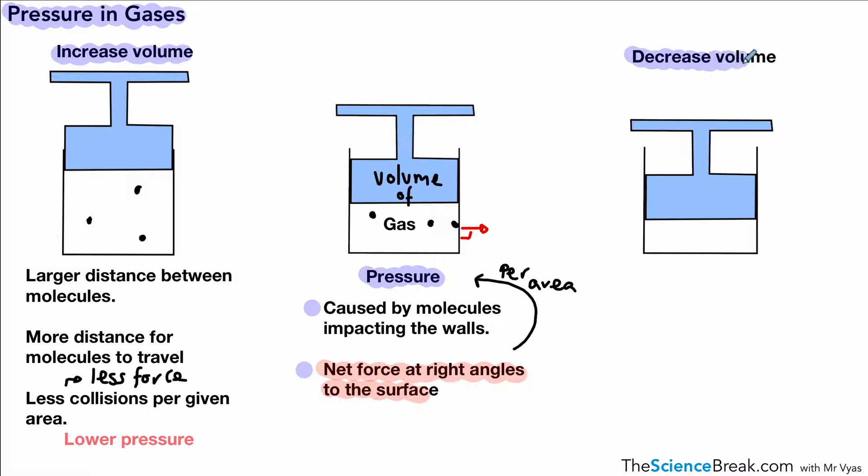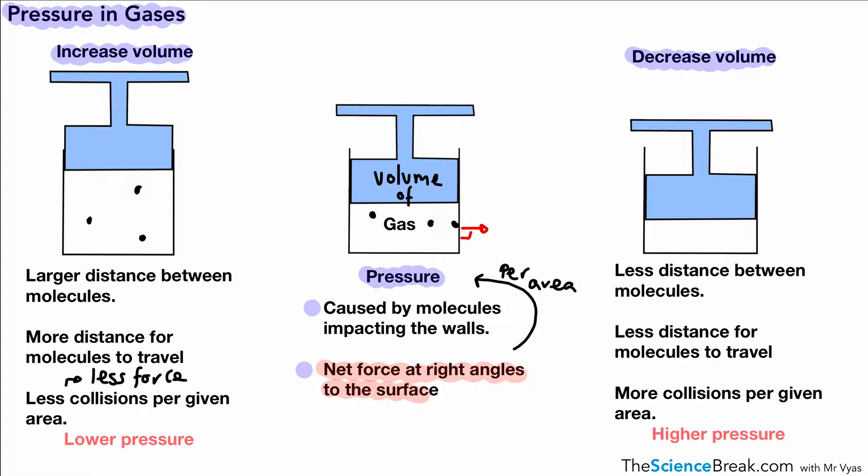What happens if we decrease the volume? Why don't you pause and see if you can explain this? If we decrease the volume, there is less distance between molecules, so less distance to travel, meaning more collisions per given area. More force per given area leads to higher pressure. Make a note of this slide so you can refer to it when needed.